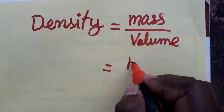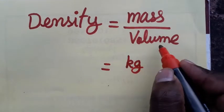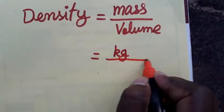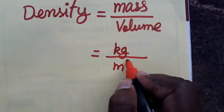Mass SI unit will be kg. Volume we can take as length into breadth into height. That means meter into meter into meter. You will get it as meter cube.